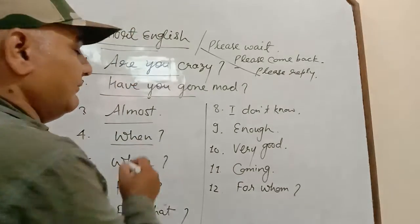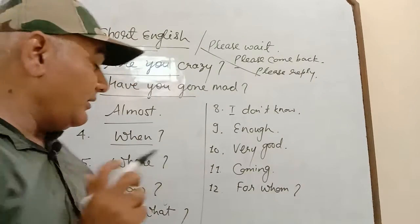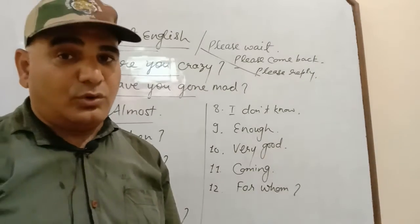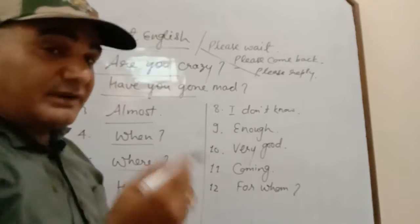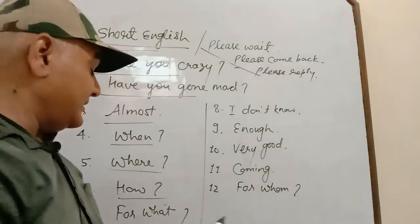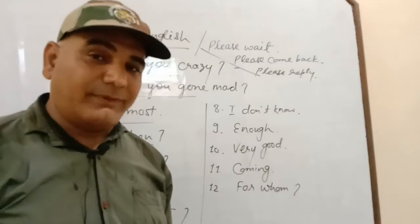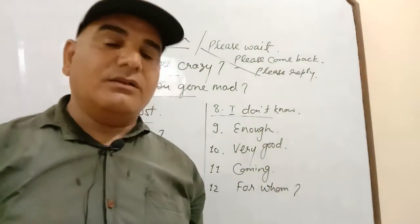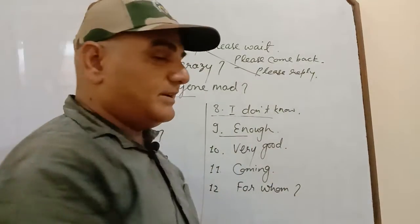Almost everybody is ready to learn English. 'When' — you want to know about when the class is going on. 'Where' — you want to know where I am. 'How' — how the work will be done according to the situation. 'For what' — for example, for what gift have you bought for somebody?